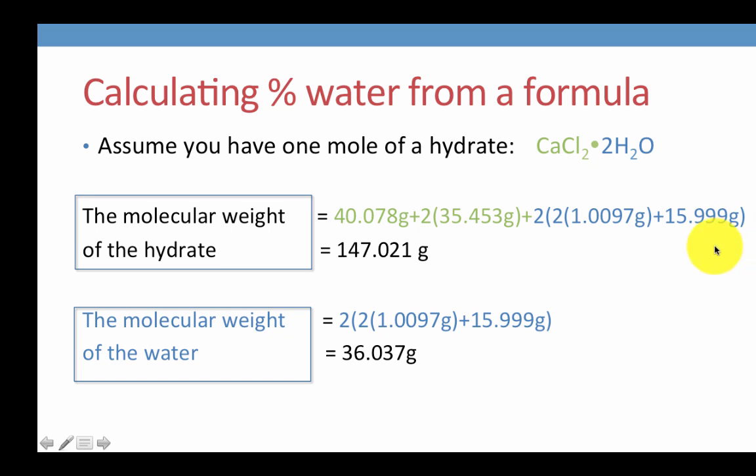If we do the mathematics on that, we'll find that the molecular weight of calcium carbonate dihydrate is 147.021 grams. We next find the mass of the water alone, and we can do that by simply isolating this last part of our calculation. So 2 waters, so 2 times 2 hydrogens plus 1 oxygen, gives the mass of water as 36.037 grams.